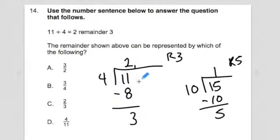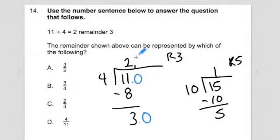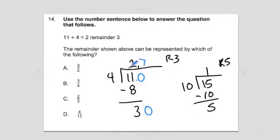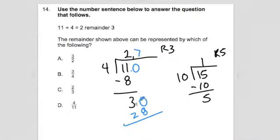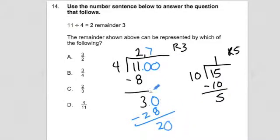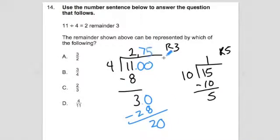This is where we carry down a zero — we're really moving over the place value. So instead of going into the ones column, it's going into the tenths column. How many times does 4 go into 30? It's actually 7 tenths — we'll just say 7. 7 times 4 is 28; subtract, you get 2 tenths. Bring down a hundredth, so I've got 20 hundredths. 4 goes into that 5 times, or 5 hundredths. So we've turned remainder 3 into 0.75.